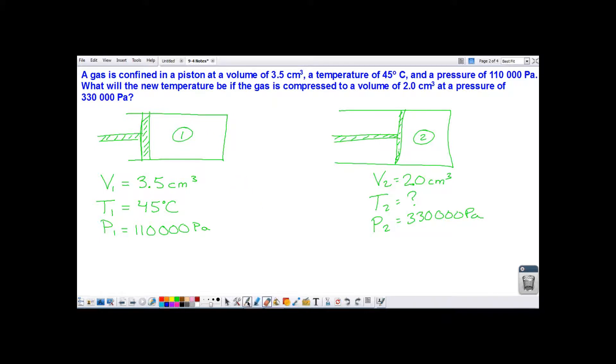So we've got pressure 1, volume 1 over temperature 1 is equal to pressure 2, volume 2 over temperature 2.